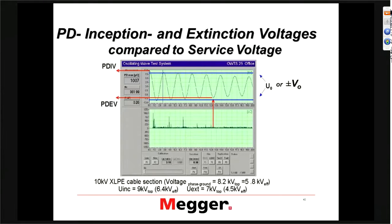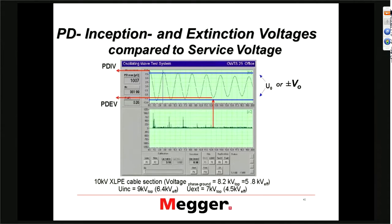When you do PD testing, you always want to test at a somewhat higher voltage than operating voltage — to simulate maybe a switching surge — and to see whether a switching surge could create PD that would persist at lower than operating voltage levels. For the most part, we recommend 1.2 to 1.3 U-naught, which will normally be good enough to ensure your extinction level is still above operating voltage. This particular aspect of checking the cable for switching surges cannot be done when doing an online test, because you can never exceed your operating voltage.